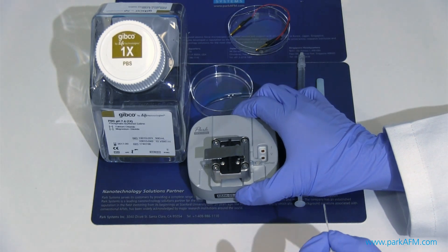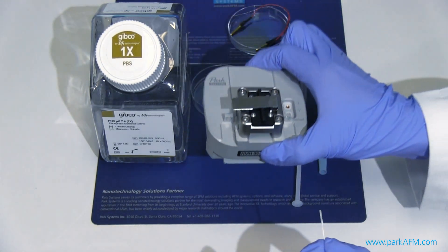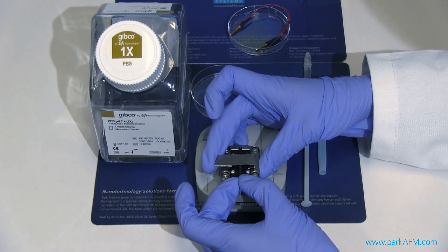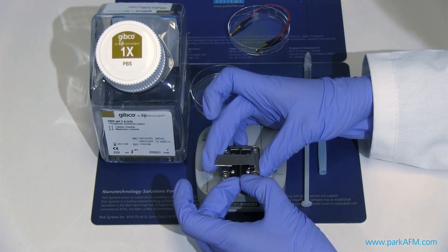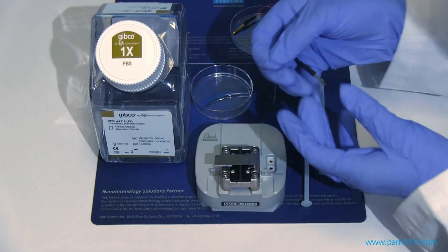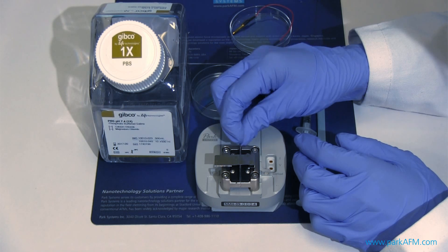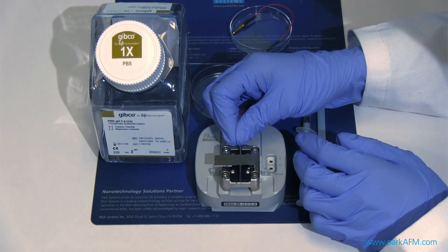Now let's attach the pipette to the SICM head. Lift the spring clip and slide in the pipette first, and then wire the pipette to the head by plugging in the silver silver chloride electrode.